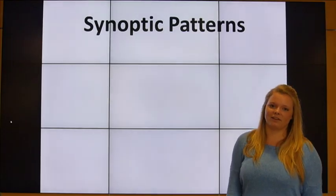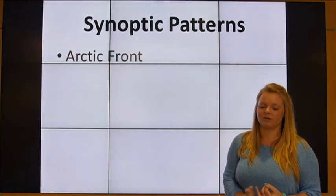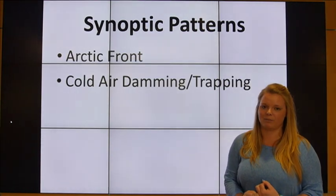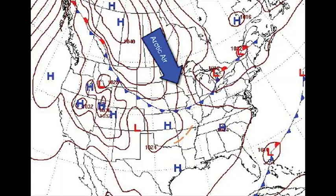Common synoptic patterns associated with the formation of freezing rain events include an Arctic front, cold air trapping and damming, and the warm or occluded sector of a cyclone. An Arctic front progresses in a southeastward direction ahead of a strong anticyclone. The region in which freezing precipitation is found corresponds to the location of the 32-degree isotherm.